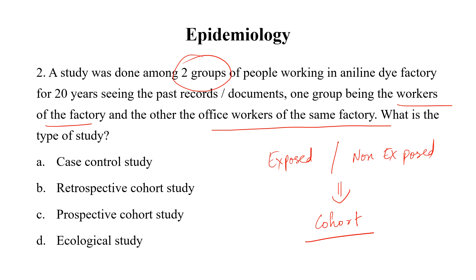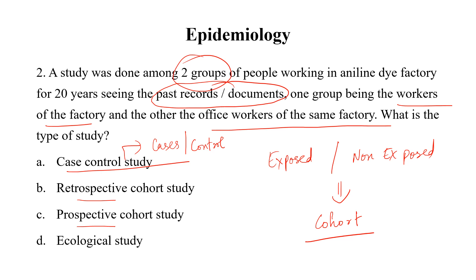In a cohort study, we take the exposed and non-exposed groups. It is not a case control study because in case control, we take cases and controls — the diseased and non-diseased individuals. The question is not talking about disease or outcome, only about exposure. The key catch is 'past records or documents,' meaning the study is not done by waiting 20 years to see the outcome — we are going to the past records. So the answer is Retrospective Cohort Study, not Prospective Cohort.